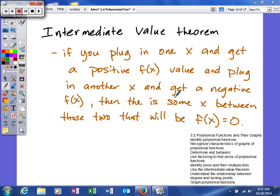It says if you plug in one x and get a positive f(x) value and plug in another x and get a negative f(x) value, then there is some x between those two that will have a function value of 0.